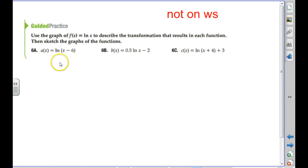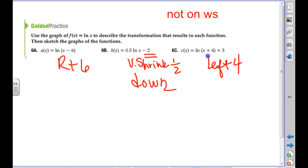You don't have these, but tell me what these would be really fast. Right six. Nope. Stretch. Shrink. Vertically by 1/2 or 0.5. And this is not in the parentheses, so it's what? Down two. And this one would be? Left four and up three. Good call.